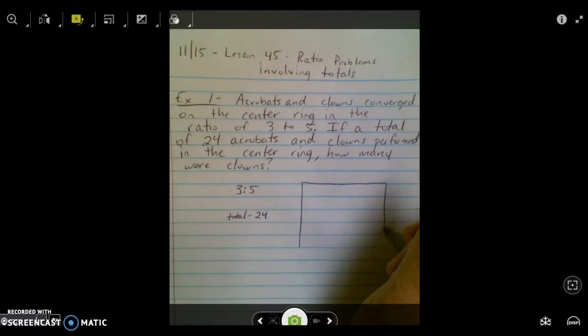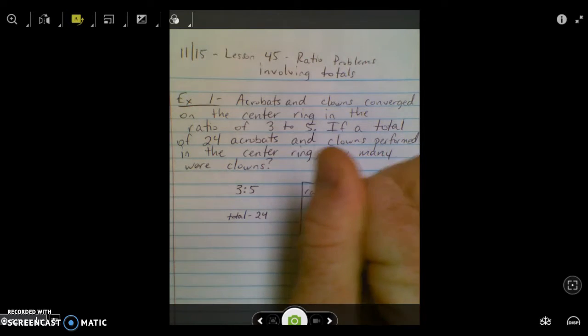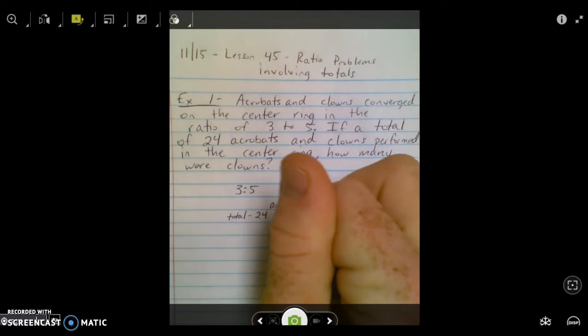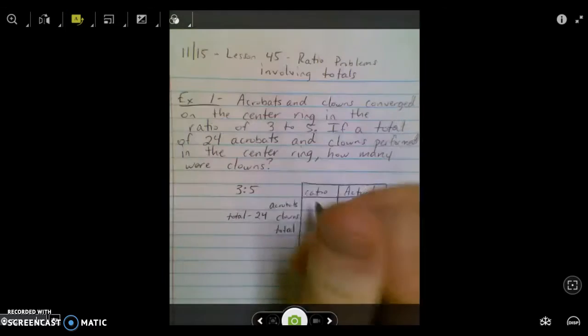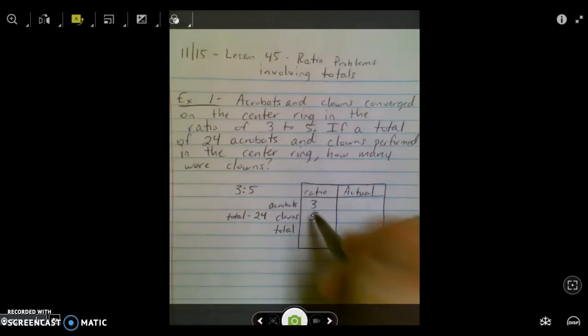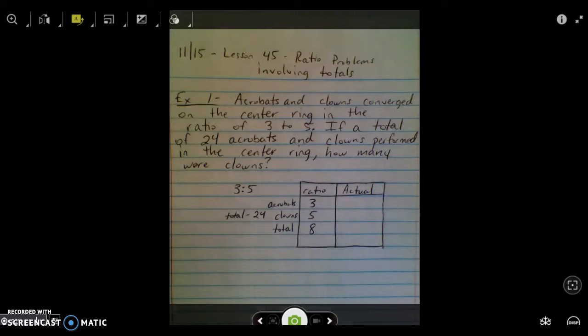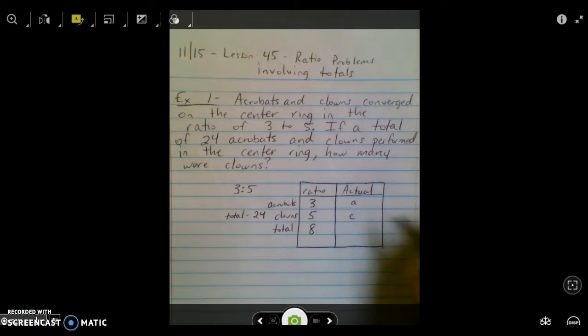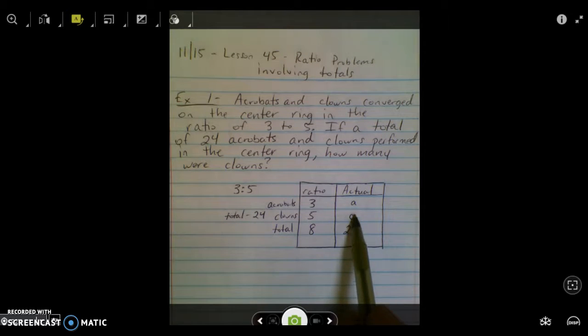You're going to find the book does this for both examples, makes a table like this. We've got acrobats, clowns, and the total number. So we've got three acrobats to five clowns. The ratio total, add those two together. Remember ratios are out of a total, so the ratio total is eight. And we don't know how many actual acrobats we had, we don't know how many actual clowns we had, but we know that we had 24 total of them both together. The problem asks for how many were clowns, so we're looking for this right here.